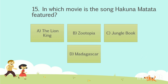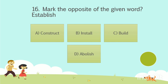The answer is Option A: The Lion King. Question number 16. Mark the opposite of the given word — establish. Option A: Construct. Option B: Install. Option C: Build. Option D: Abolish. Your time starts now.